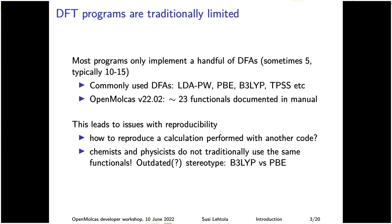The general issue is that when you have independent implementations of functionals in different programs, you can't really reproduce calculations unless the implementations have been properly validated. Historically, running the same calculation in two different codes using the same functional can give different results. The choice of functionals also depends on the use case — physicists use PBE, chemists use B3LYP — so historically you didn't have B3LYP in physics codes or PBE in chemistry codes.